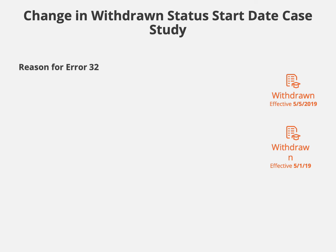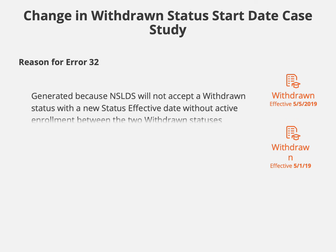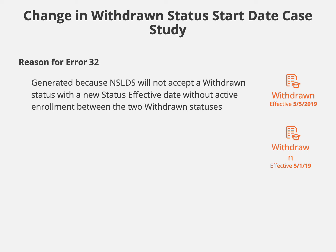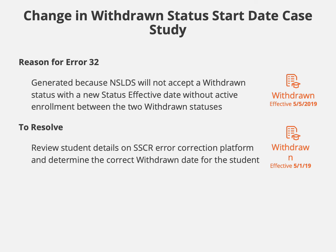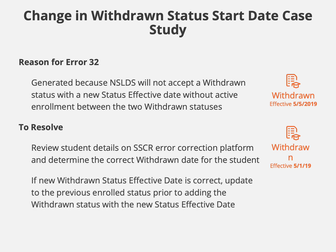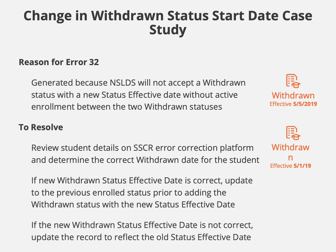So why was the Error 32 returned? NSLDS will not accept a change in the status effective date for a withdrawn status if there is no active enrollment between the two withdrawn statuses. To resolve the error, first review the student's record through the SSCR error correction platform and determine the correct withdrawn date for the student. If the new withdrawn date is correct, update the record to the previous enrolled status and allow that information to go out to NSLDS prior to adding the withdrawn status with the new status effective date. If the new withdrawn date is not correct, update the record to reflect the previous withdrawn date.